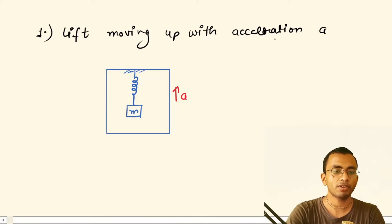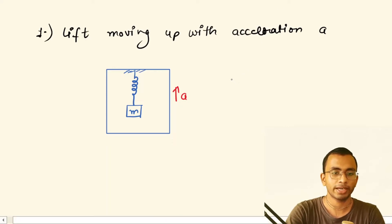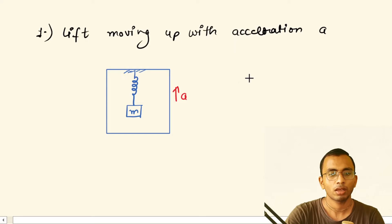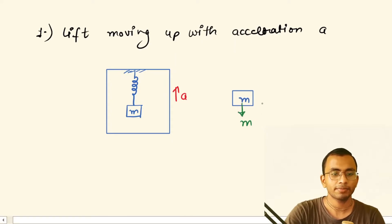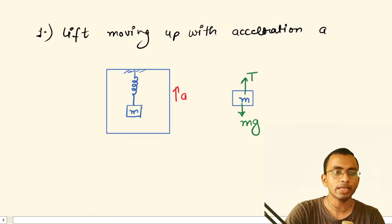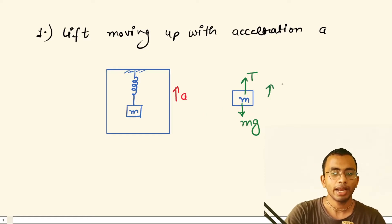We will draw the free body diagram of this mass m and show all the forces acting on it. Downward, gravity is acting — that is mg. Upward, the tension force is acting due to the spring. The mass is moving up with acceleration a.